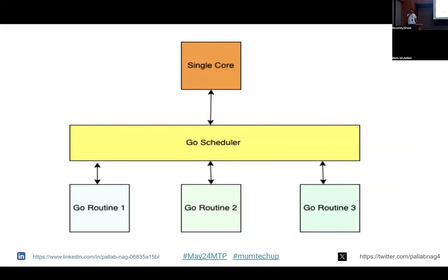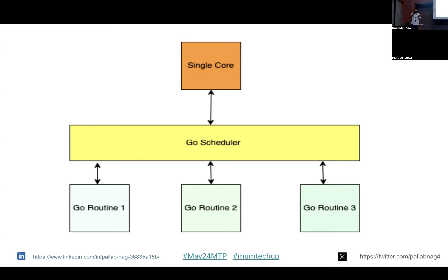Let's replace this waiter with a single-core system. The waiter is replaced by a single-core system. The Go scheduler is using only one core, taking one goroutine at a time, executing that routine, then coming back and taking the next. This is just an analogy for how the waiter is also performing in our case.